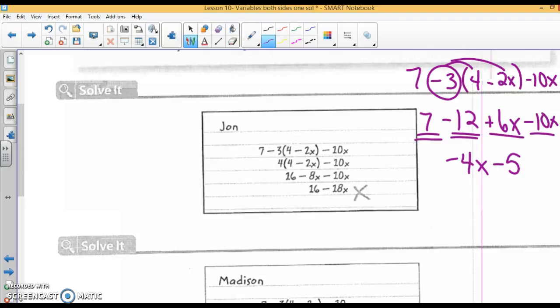Let's see where this person went wrong. Take a look at what John did. Look what my first step is distributing. Look what his first step was. He combined like terms here. Here's the mistake.